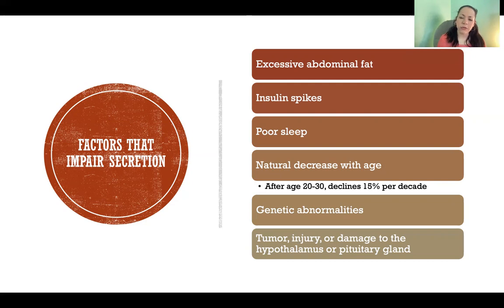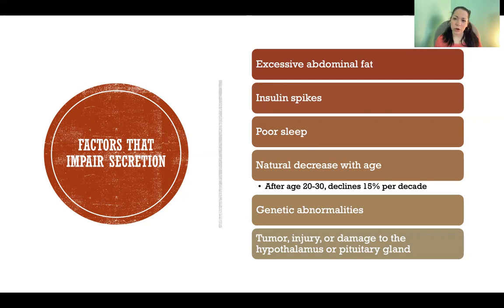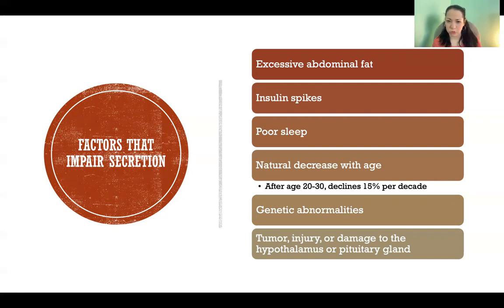Of course, there are also things like genetic abnormalities — certain conditions that interfere with growth hormone production — or things like tumor, injury, or other types of damage to the hypothalamus or pituitary gland.